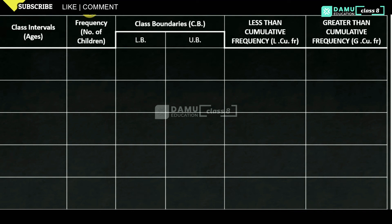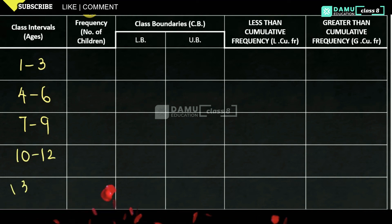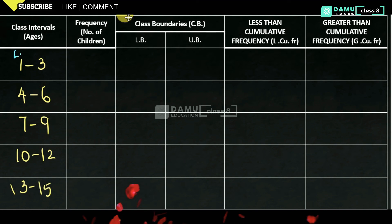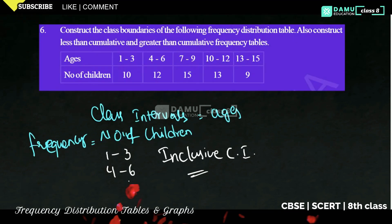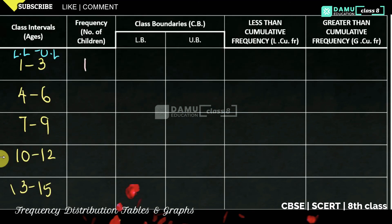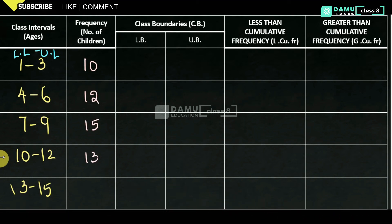So, write the class intervals. Ages will be: 1–3, 4–6, 7–9, 10–12, 13–15. What are the lower limits? These are all lower limits. These are the upper limits. And frequency — number of children — is: 10, 12, 15, 13, 9.